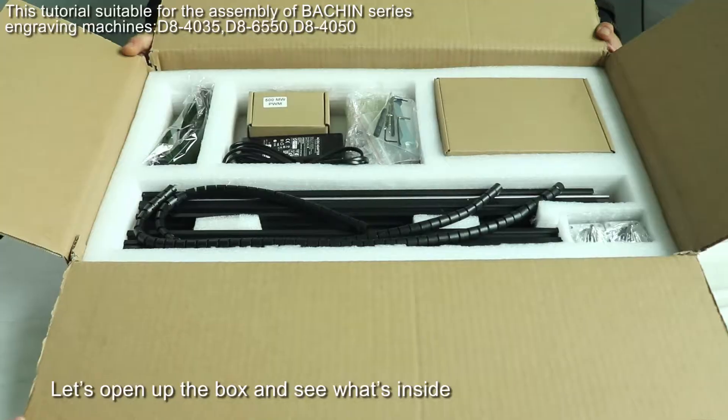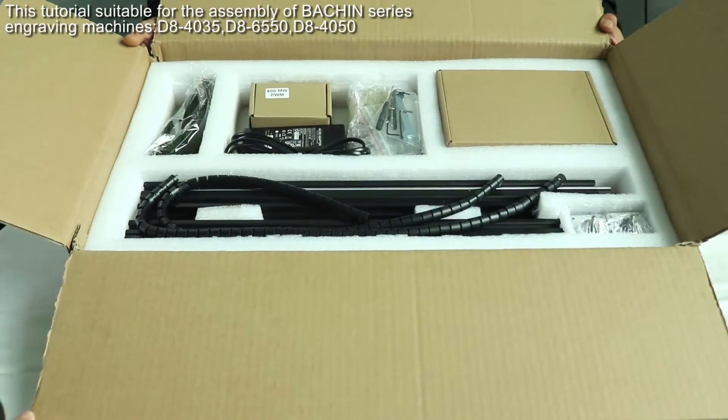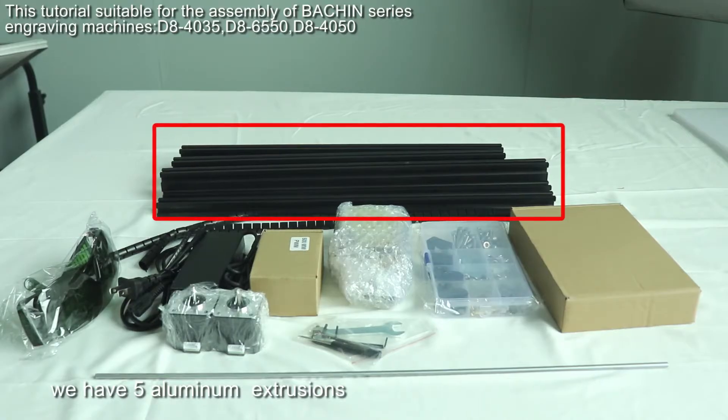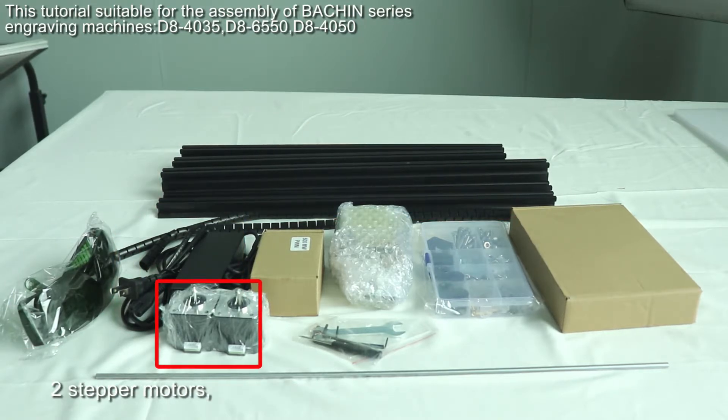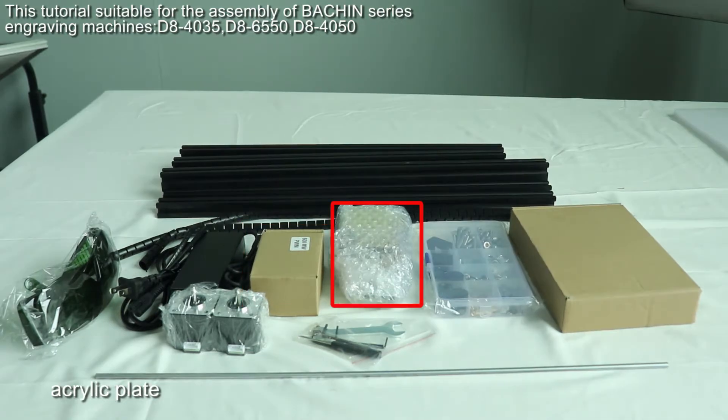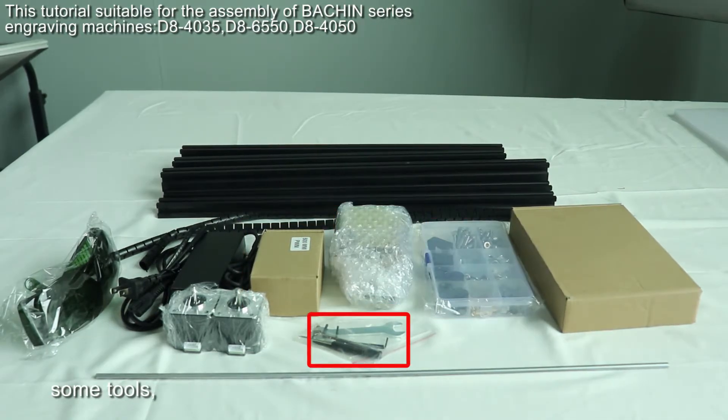Let's open up the box and see what's inside. We have 5 aluminum extrusions, safety goggles, a power supply, 2 step motors, the laser module and its cable, acrylic, screw box, and some tools.